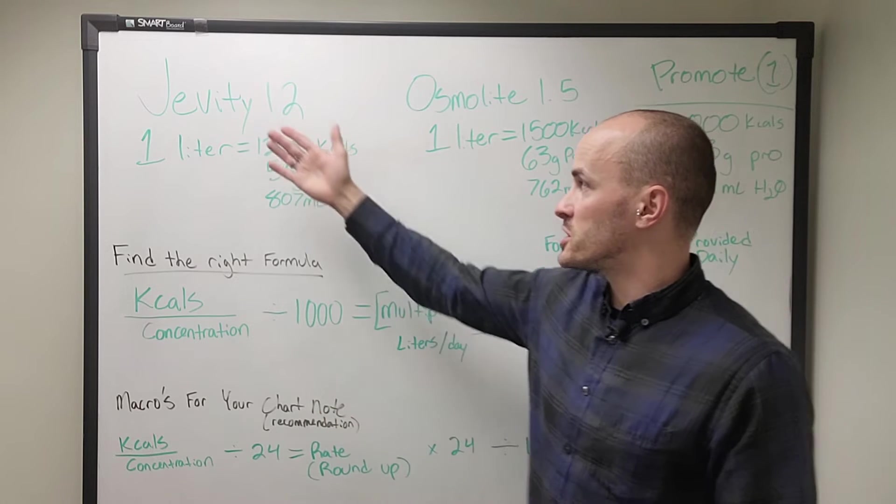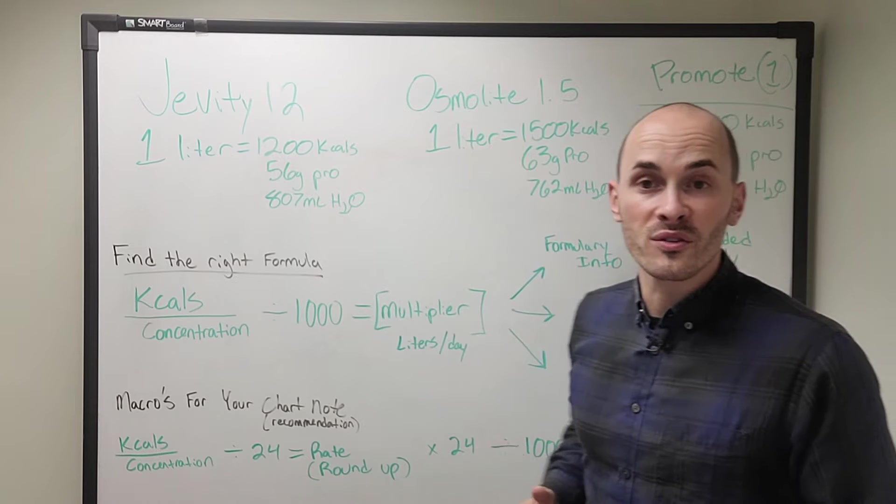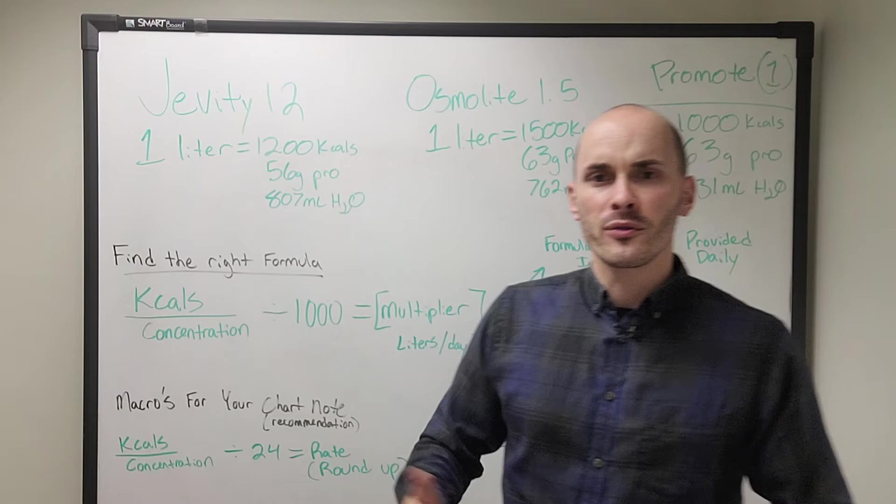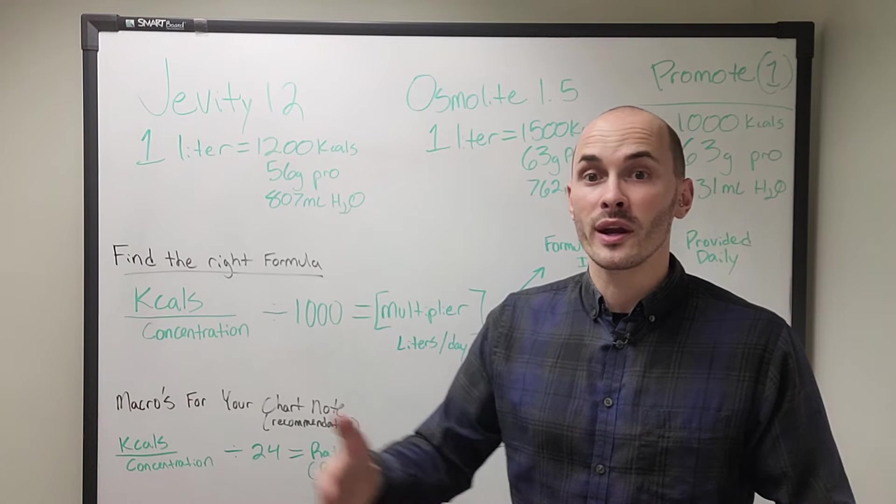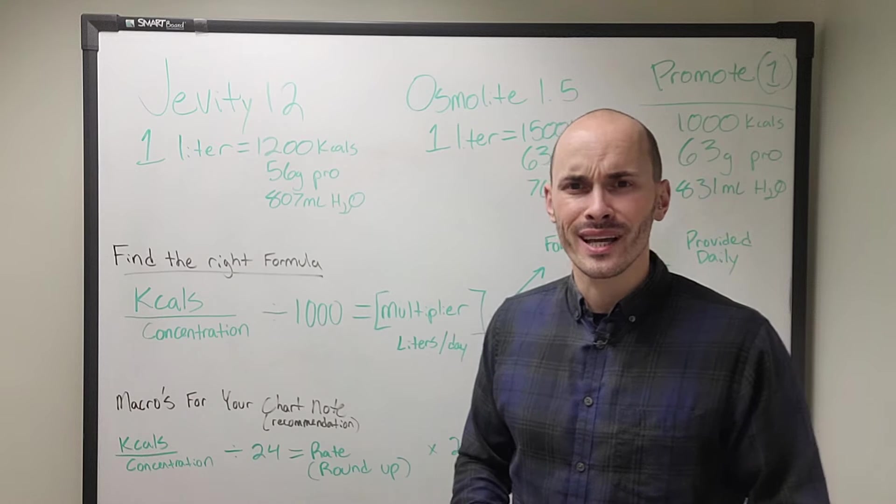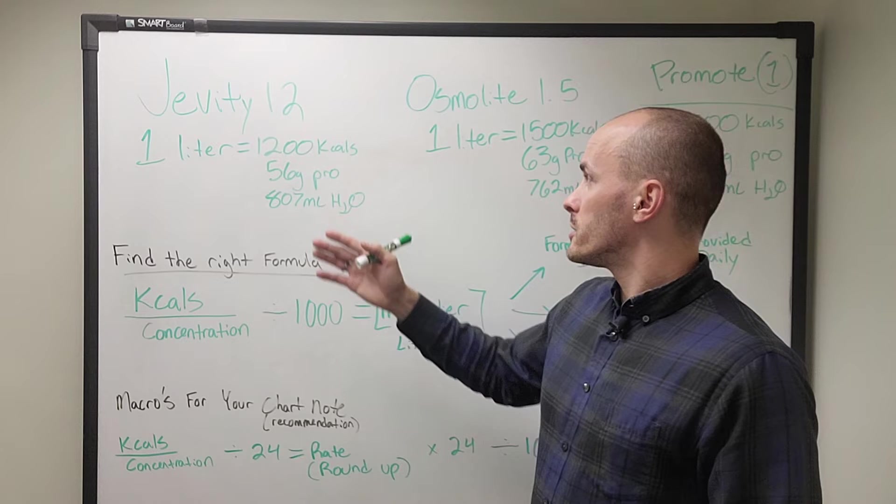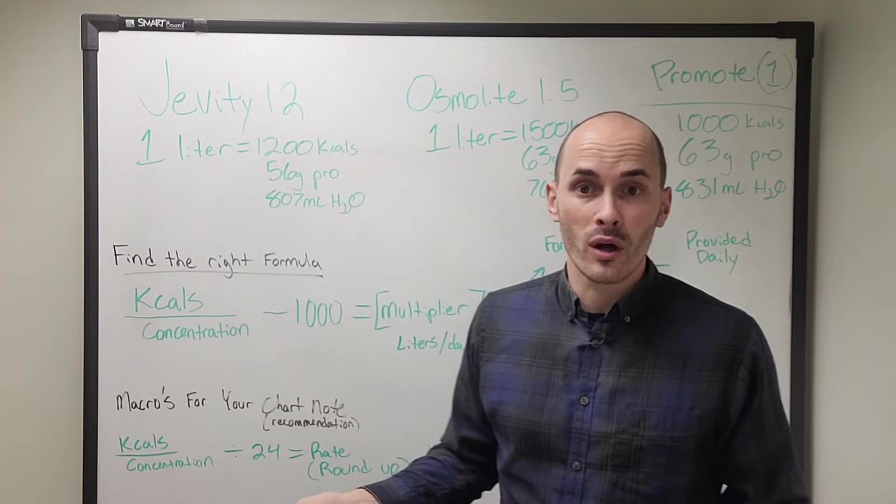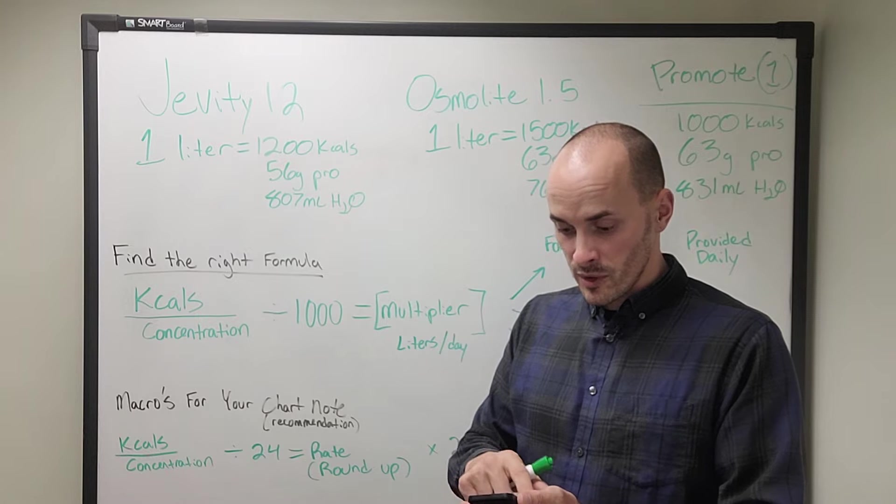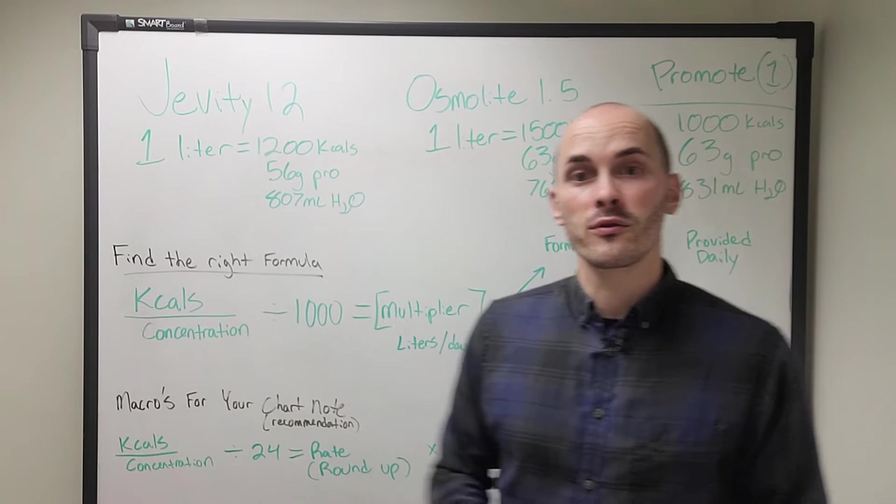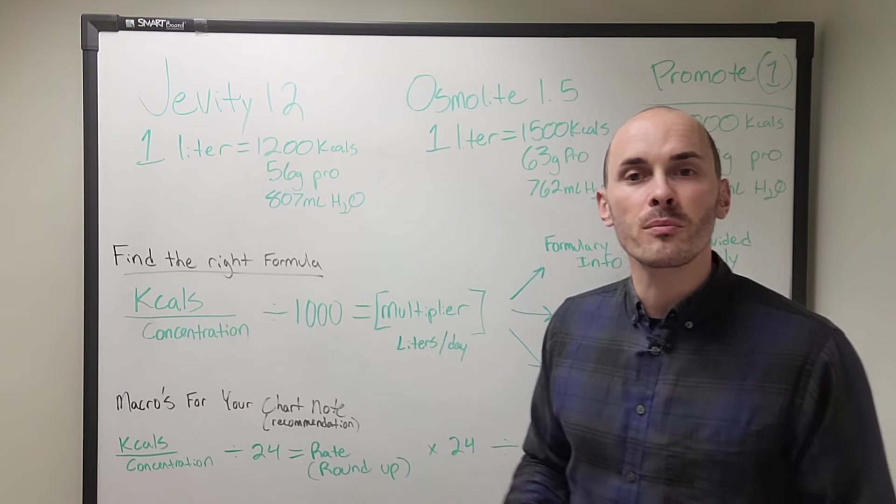So let's say for example, your hospital has a Jevity 1Cal and an Osmolite 1.5. Well, if your patient has very high energy needs, let's say they need 2,500 calories a day, I'm probably not going to want to give them, you could give them the Jevity 1Cal. You would just have to give them 2,500 milliliters per day or around 104 mils an hour, which would be acceptable for a nutrition support formula.